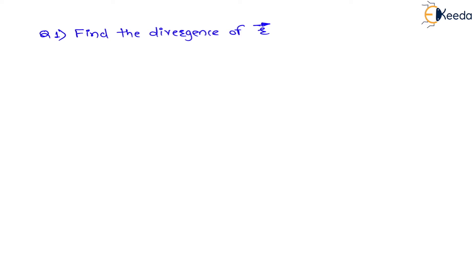We know how to write this. In terms of x, y, z this position vector r is written as x·î plus y·ĵ plus z·k̂. This is called the three-dimensional position vector. And now here we have to find the divergence.